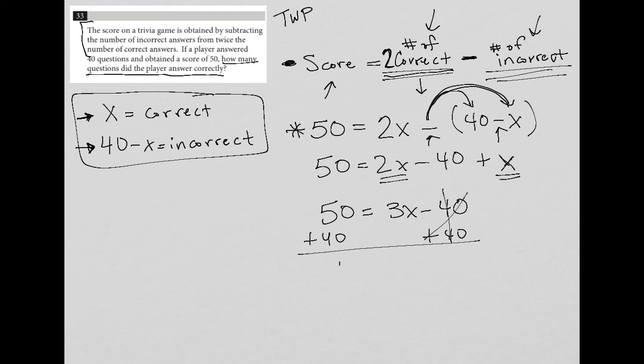40 is gone from here. I'm left with 90 equals 3X. Divide both sides by 3, and I'm left with X equals 30. Because X represents the number of correct questions and the question is asking how many questions the player answered correctly, 30 is my answer.